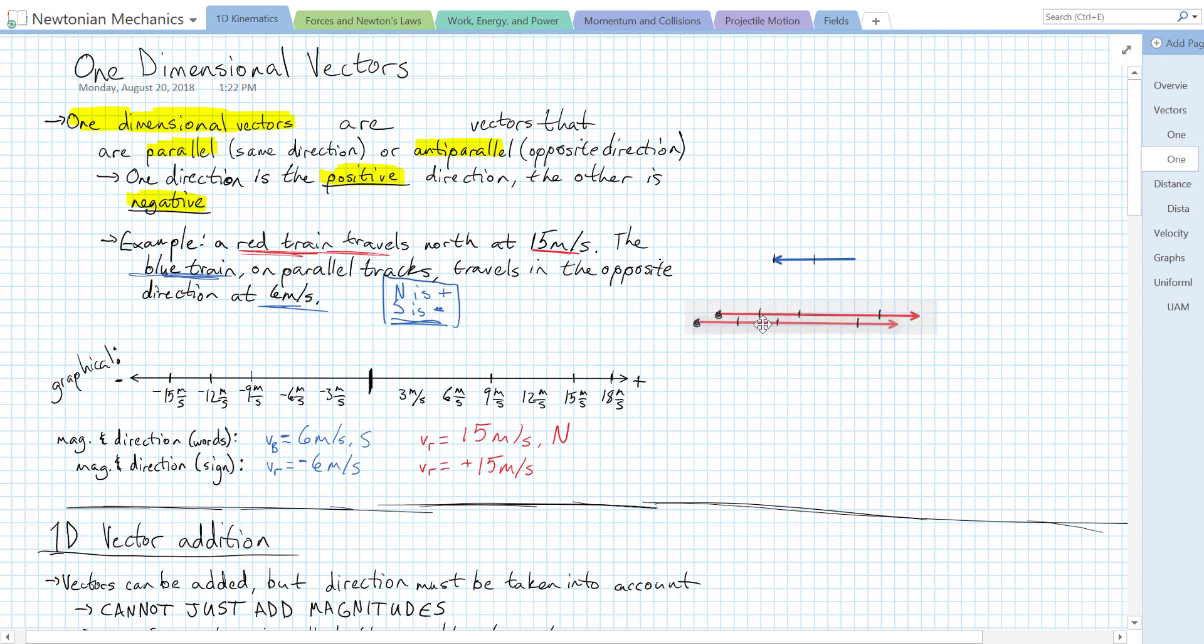So I'm going to move these vectors onto the number line. We'll see that their magnitude is proportional to their length, and the direction is the direction. Our red train points in the positive direction with a magnitude of 15 meters per second. Our red vector represents the red train.